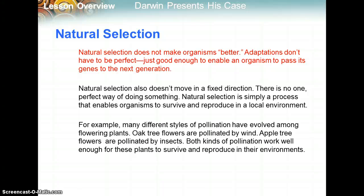For example, many different styles of pollination have evolved among flowering plants. Oak tree flowers are pollinated by the wind, while apple tree flowers are pollinated by insects. Both kinds of pollination work well enough for these plants to survive and reproduce in their environments, so neither is necessarily better than the other — they both work well in their particular environments, and that is a good adaptation.